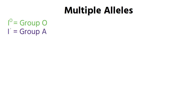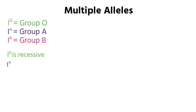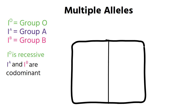The other example for a monohybrid cross is where some genes can have multiple alleles. The main A-level example is the ABO blood group system, which has three alleles. You write them as I with a superscript: I superscript O for blood group O, I superscript A for blood group A, and I superscript B for blood group B. I superscript O is recessive, while I superscript A and I superscript B are codominant.